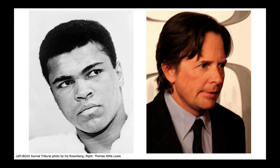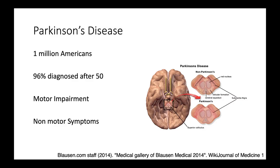You may have heard of Parkinson's disease in the context of someone like Muhammad Ali and Michael J. Fox. Parkinson's disease is the second most common neurodegenerative disorder and it affects about one percent of adults over the age of 60. It affects a region of the brain called the substantia nigra, and about one million Americans are diagnosed, most after the age of 50. Parkinson's disease is associated with motor symptoms like tremors and slow movements, but also non-motor symptoms like constipation. One of the reasons people started to think the microbiome might be associated with Parkinson's disease was because of the constipation.